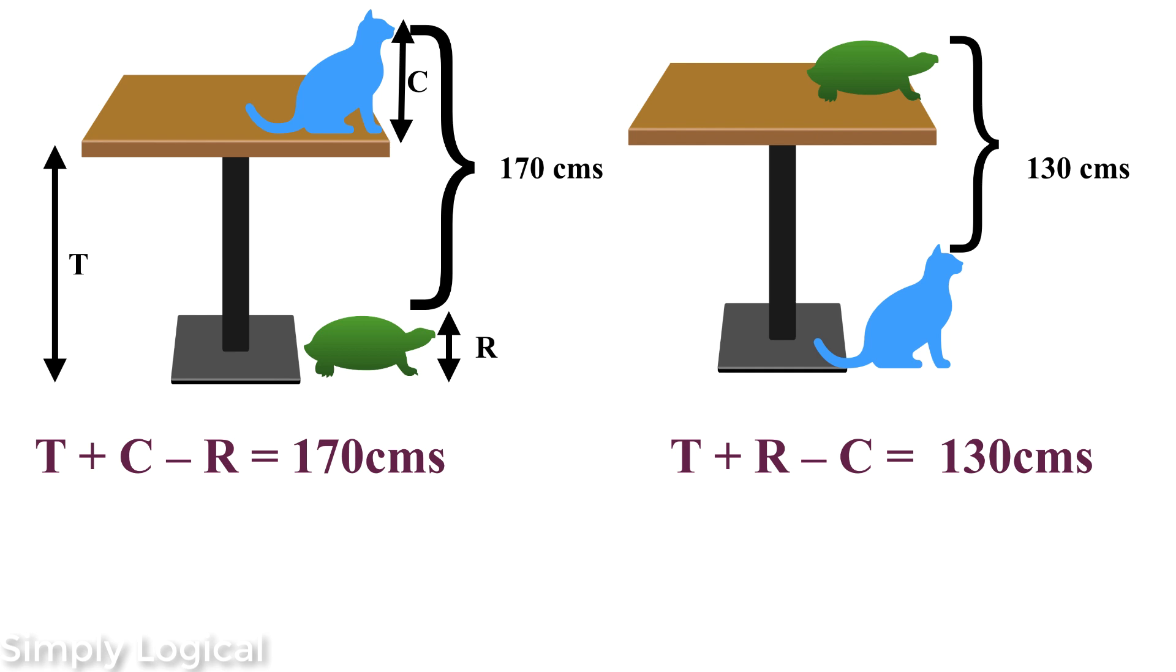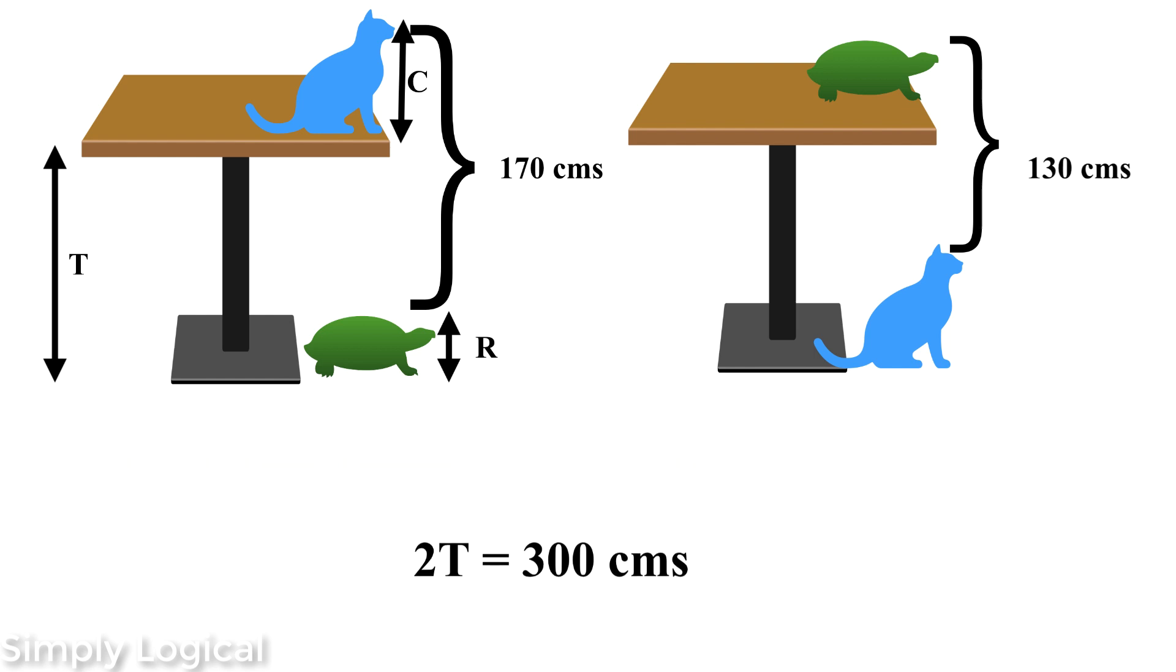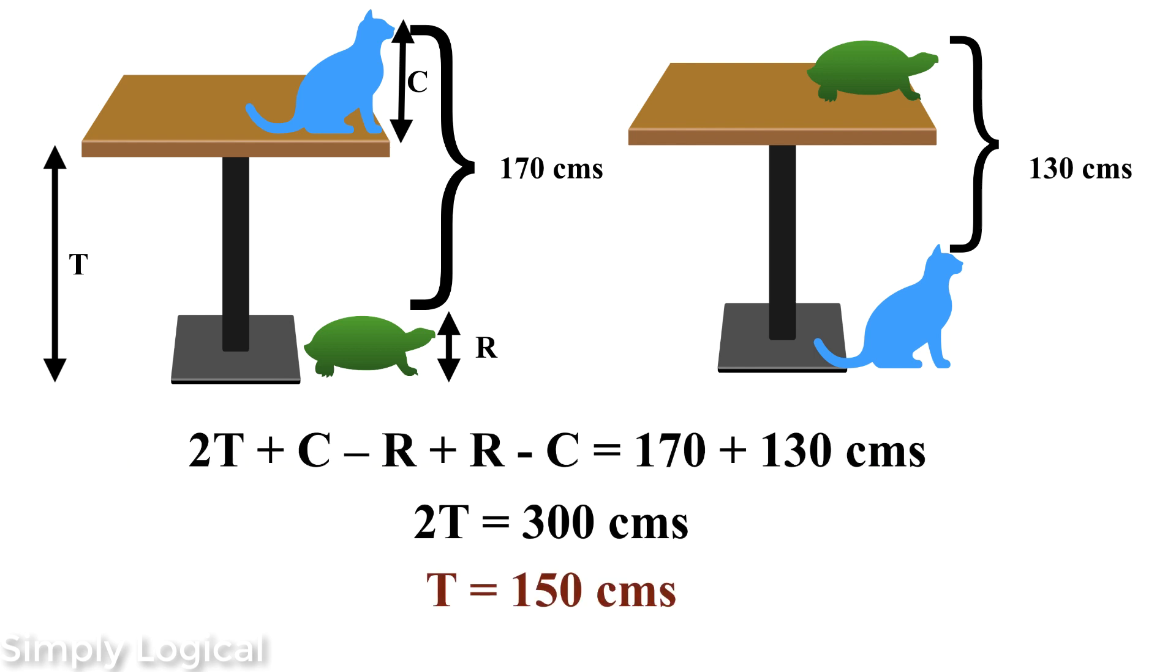When there are two equations, then the job becomes simple. Let's solve these equations by adding both the equations, which results in T plus T, which is 2T, plus C minus R, plus R minus C, equals 170 plus 130 cm. In the equation we can cancel plus R with minus R and plus C with minus C. Finally it results in 2T equals 300 cm, and finally T equals 150 cm.